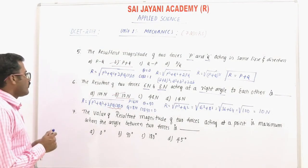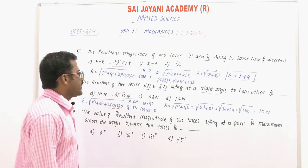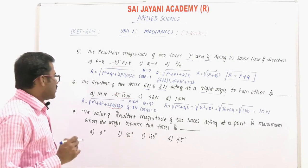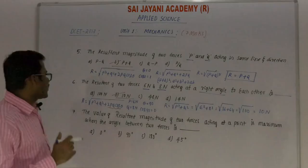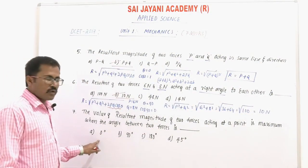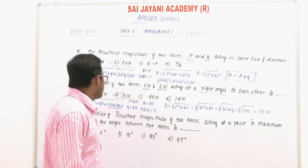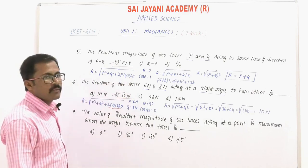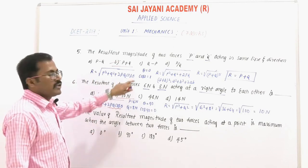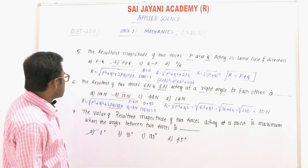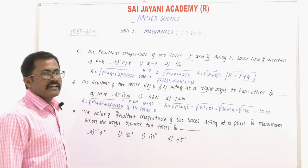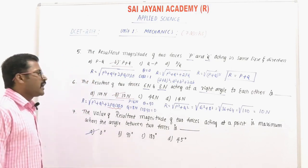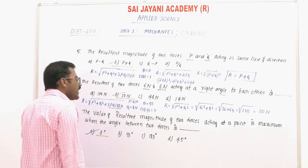Question number 7: the resultant magnitude of two forces acting at a point is maximum when the angle between the two forces is — option A: 0°, option B: 90°, option C: 180°, option D: 45°. Using R = √(P² + Q² + 2PQ cosθ), the resultant is maximum when θ = 0°, and minimum when θ = 180°. So option A, 0°, is the right answer.